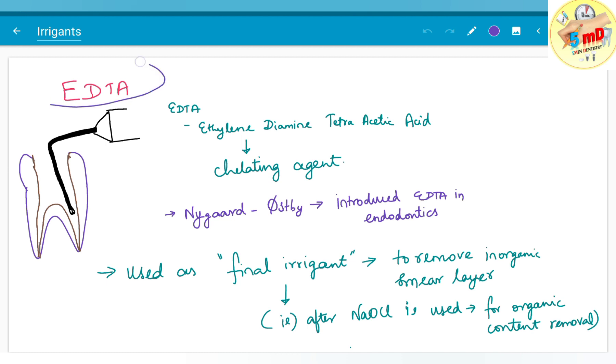Now let us move on to the second most commonly used irrigant, EDTA. Ethylene diamine tetra acetic acid is the full form of EDTA. It is a common chelating agent that chelates metals. Here, calcium is chelated by this EDTA.